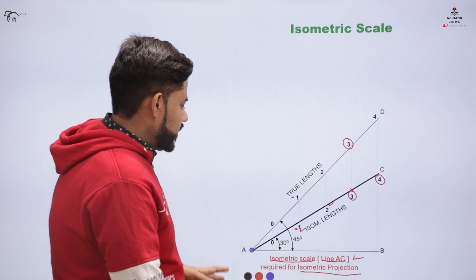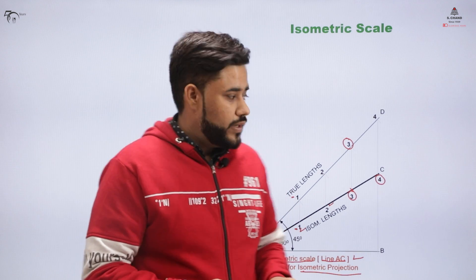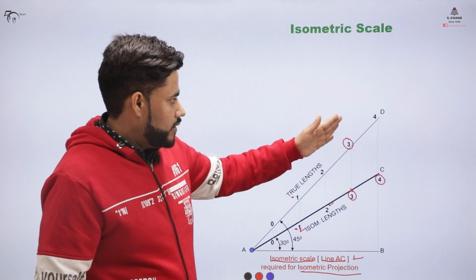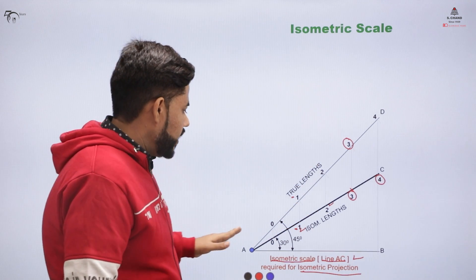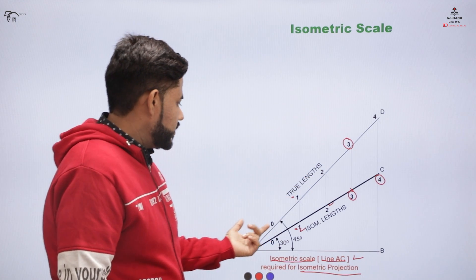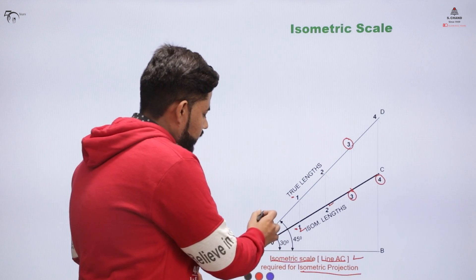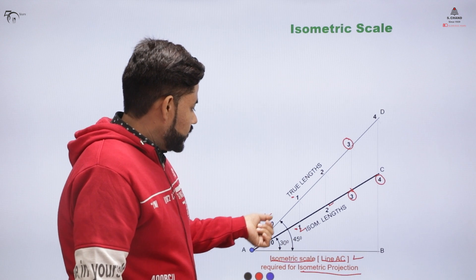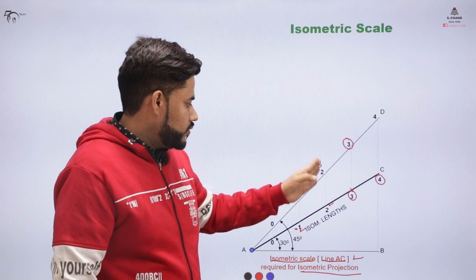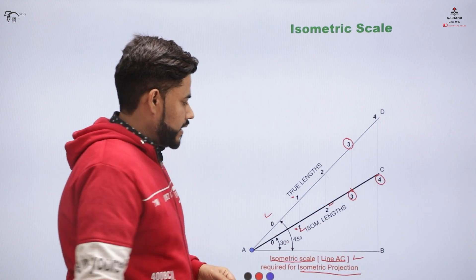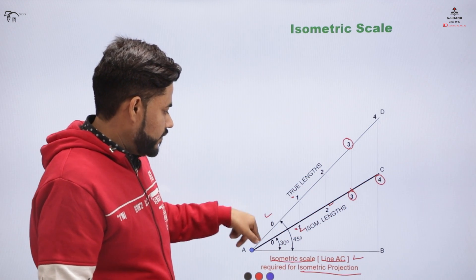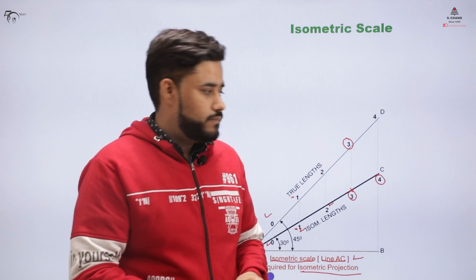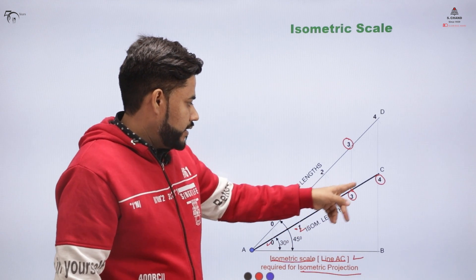Let me repeat the process. You have to make two lines: one at an angle of 45 degrees and another at an angle of 30 degrees. You have the actual length of the object — let's say 50 — and you divide that length into equal number of parts, starting with 0 up to 5. From all these points, you draw perpendiculars so that they match on the isometric length. The points on the isometric line can be labeled in the same fashion as on the true length. This line AC represents the isometric length, and these divisions indicate the scales.